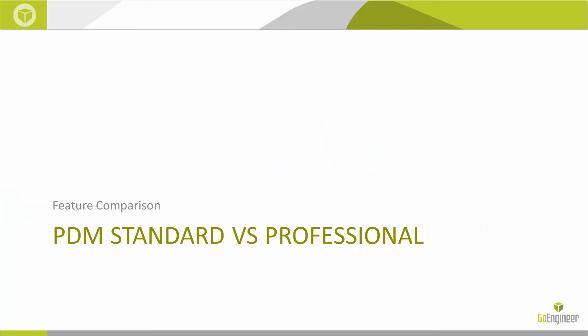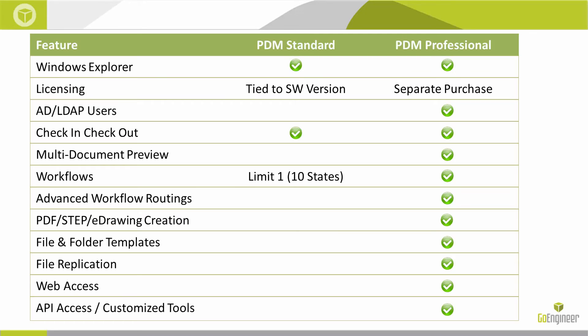Let's now compare the capabilities between SOLIDWORKS PDM Standard and PDM Professional. PDM Standard and PDM Professional share the same underlying product architecture, with PDM Standard having a restricted set of capabilities while providing a straightforward upgrade path. Both systems share the same user interface in Windows Explorer and inside SOLIDWORKS, so the user experience is completely consistent between the two platforms.